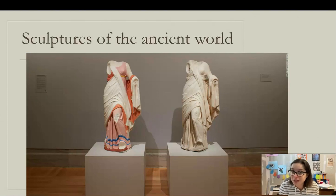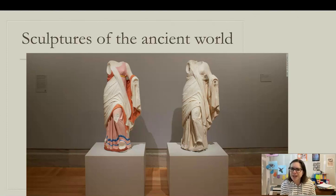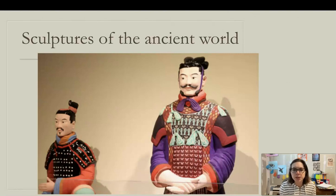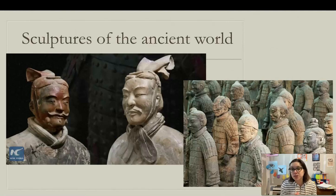Now, sculptures of the ancient world. If you look at ancient sculptures from Greece and Rome, they're completely white and beige with no color. But archaeologists and art historians have discovered that these sculptures used to be painted brilliant colors. Due to time, dust, and years of exposure to the elements, the colors faded away — just something to think about next time you see ancient sculptures.